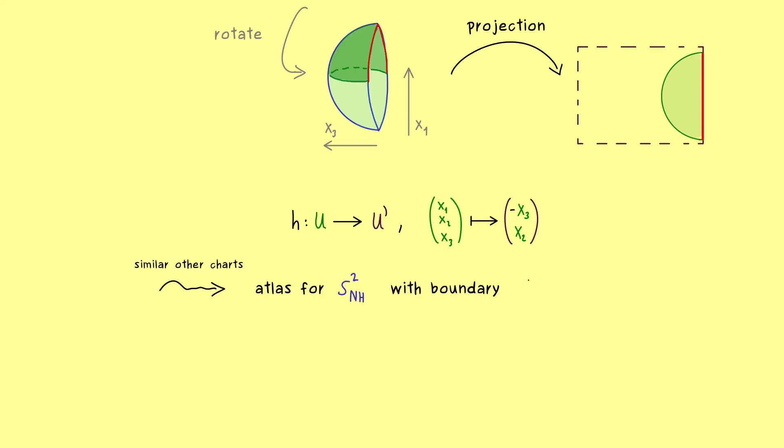Moreover, you also already know that this boundary is usually denoted by this del symbol. And indeed, with all the charts we have shown, that this boundary is actually the equator. So you could write, these are the points from S^2 where x_3 is equal to 0.